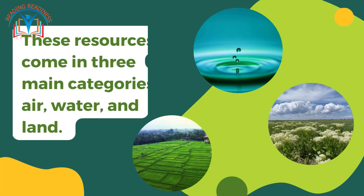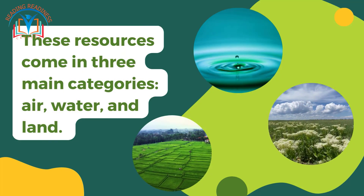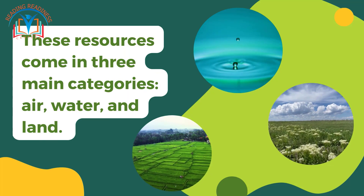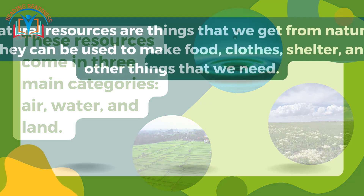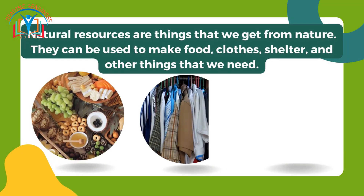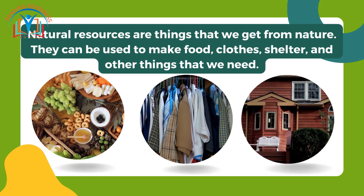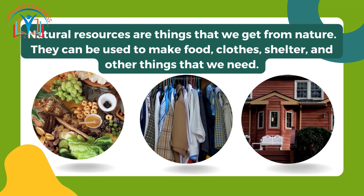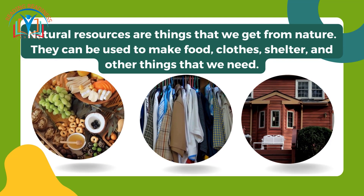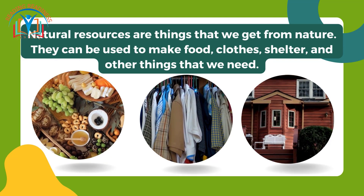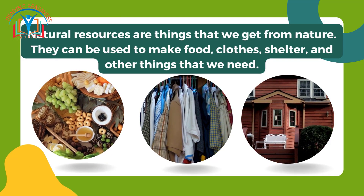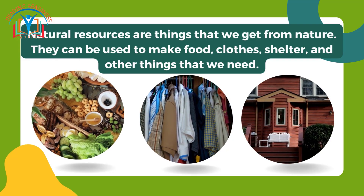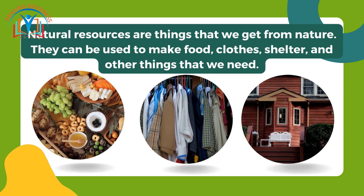These resources come in three main categories: air, water, and land. Natural resources are things that we get from nature, and they can be used to make food, clothes, shelter, and other things that we need.